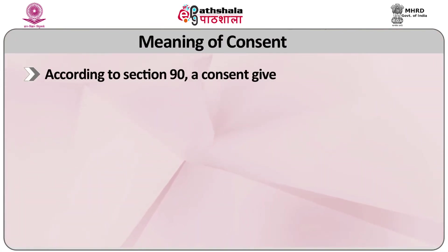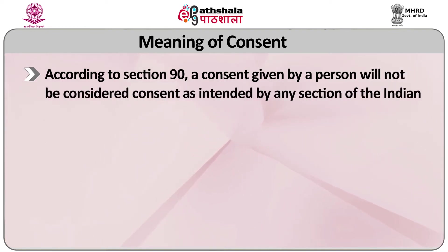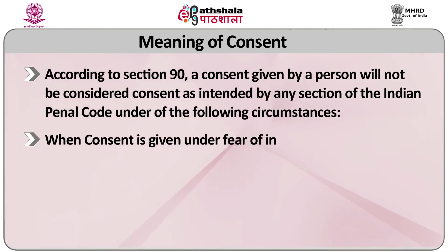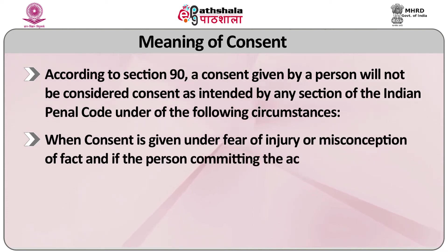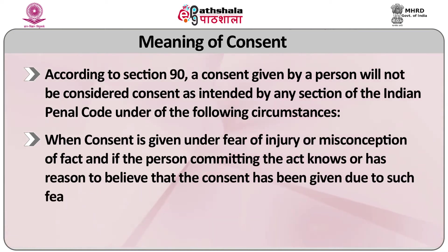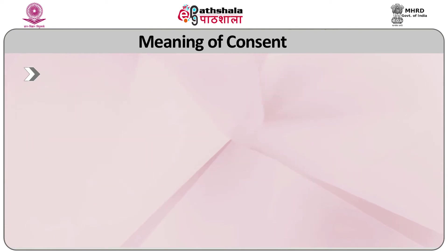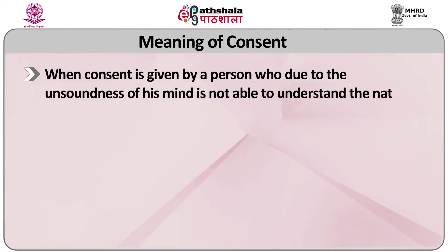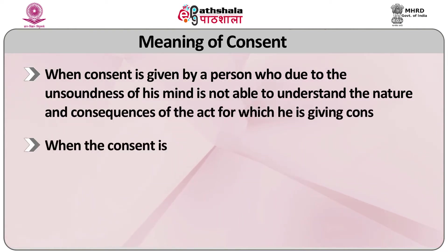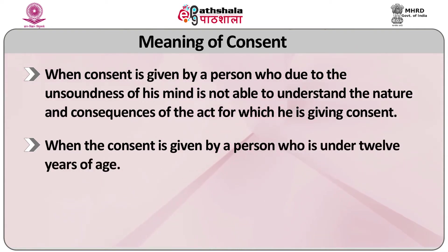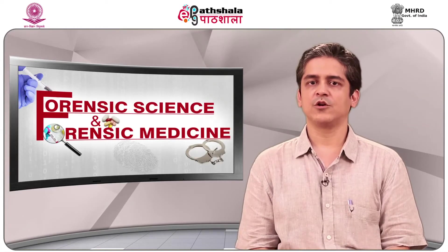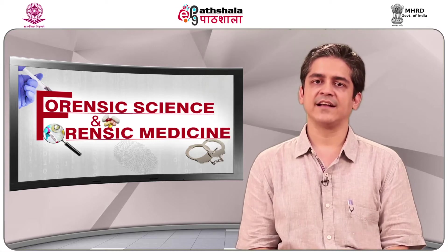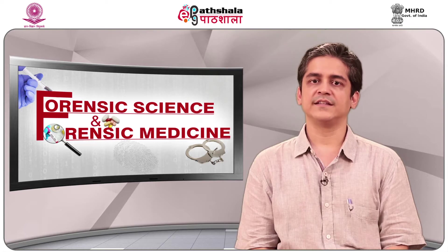According to section 90, a consent given by a person will not be considered as consent intended by any of the sections of the Indian Penal Code under the following circumstances: when consent is given under fear of injury or misconception of fact and the person committing the act knows or has reason to believe the consent has been given due to such fear or misconception; second, when consent is given by a person who, due to the unsoundness of his mind, is not able to understand the nature and consequence of the act for which he is giving consent; third, when the consent is given by a person who is under 12 years of age. When consent is given under fear or misconception, to claim that it should not qualify as consent under the Indian Penal Code, it is necessary that the person doing the alleged act is aware that the consent was given in such circumstances.